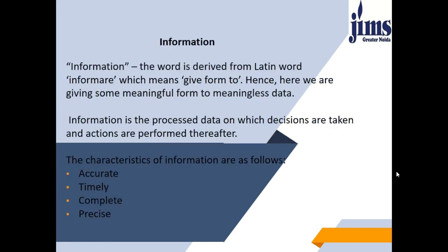Moving further, talking about information — information is the processed form of data. We are giving meaningful form to meaningless data. As we have seen, data refers to raw facts and figures. Once the data is processed, it is transformed into information, which is no longer meaningless. Information is processed data on which decisions are taken and actions are performed thereafter. The characteristics of information are: it has to be accurate, timely, complete, and precise.